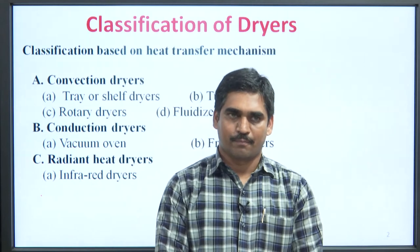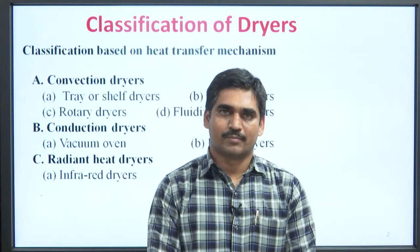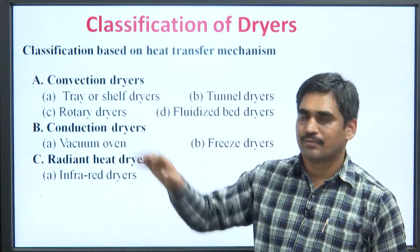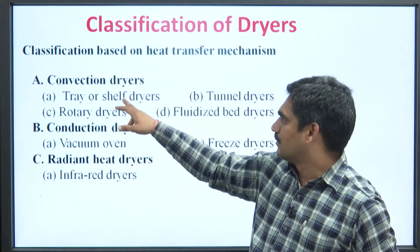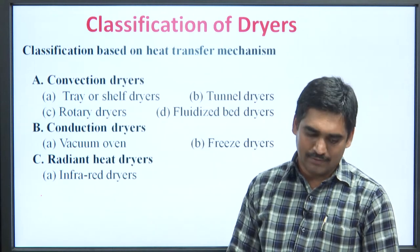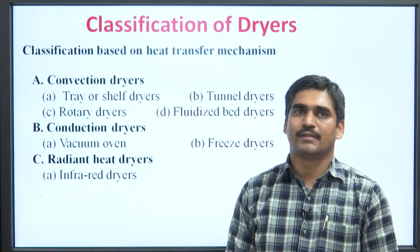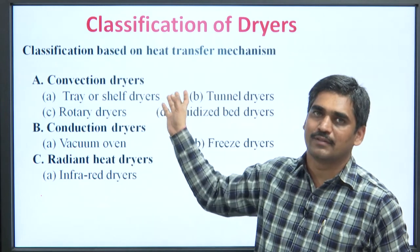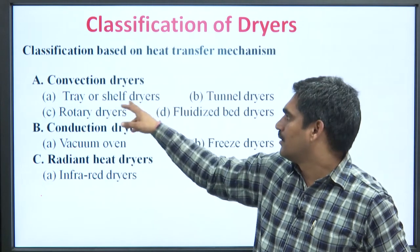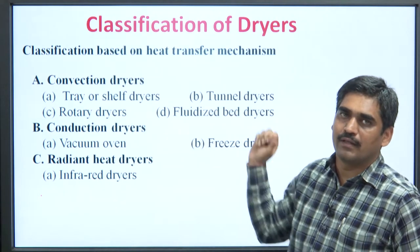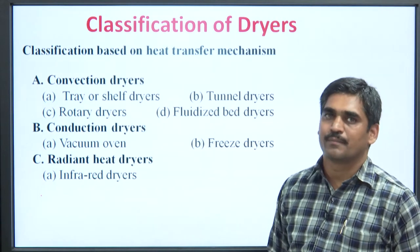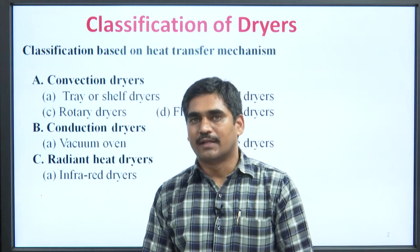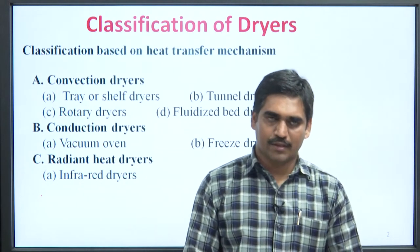Classification of dryers: based on the heat transfer mechanism, dryers are classified into three categories. First is convection dryers, second is conduction dryers, and third is radiant heat dryers. Examples of convection dryers are tray or shelf dryer, rotary dryer, tunnel dryers, and fluidized bed dryers. Examples of conduction dryers are vacuum oven and freeze dryer. Radiant heat dryers include infrared dryers.